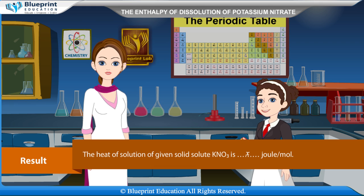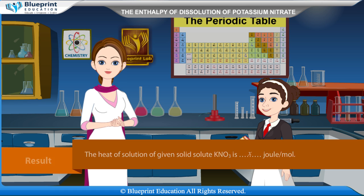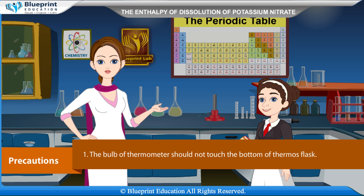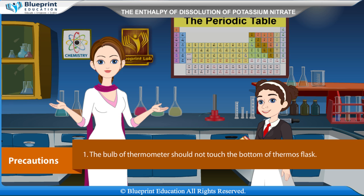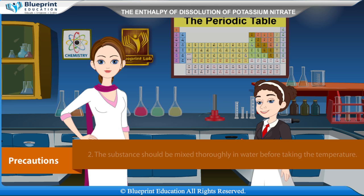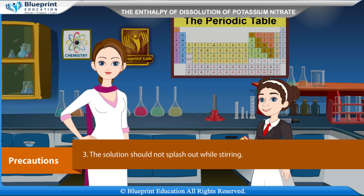Result: The heat of solution of the given solid solute KNO3 is x joules per mol. Precautions: The bulb of the thermometer should not touch the bottom of the thermos flask. The substance should be mixed thoroughly in water before taking the temperature. The solution should not splash out while stirring.